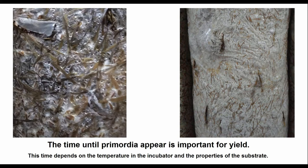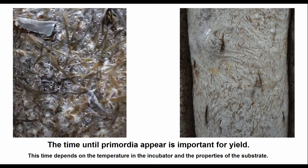During the incubation period, for good mycelial growth, a temperature of 21 or 22 degrees Celsius is needed. If the temperature is lower, the mycelium will grow slowly and primordia will appear not on days 15 to 17, but on days 24 or even 26. This does not mean that yields will necessarily be low, but more often than not, this is exactly what happens. Mycelium spends a lot of energy growing at low temperatures and its productivity decreases.